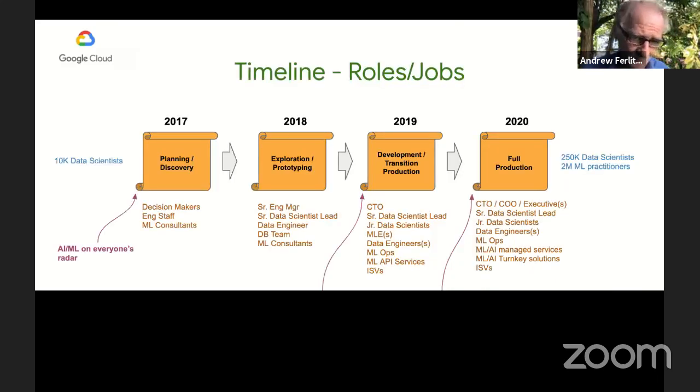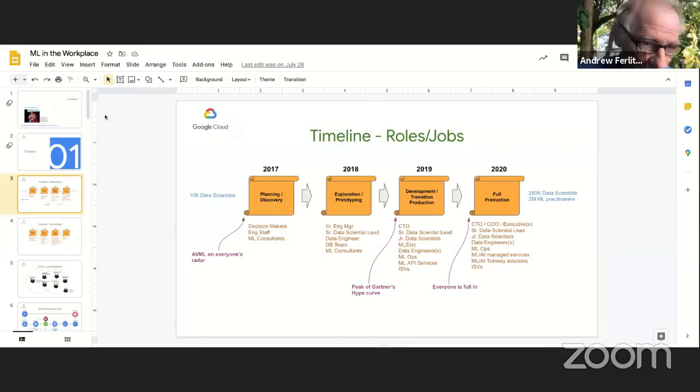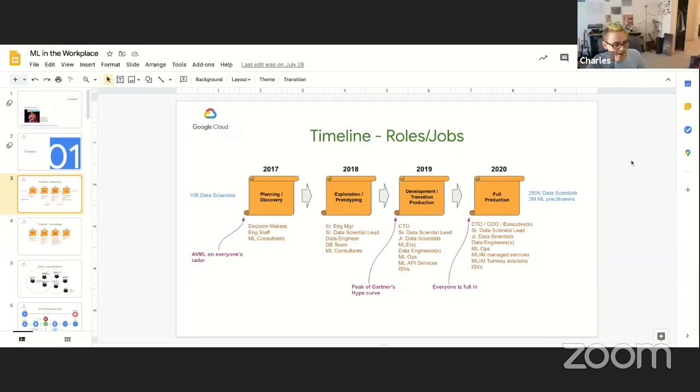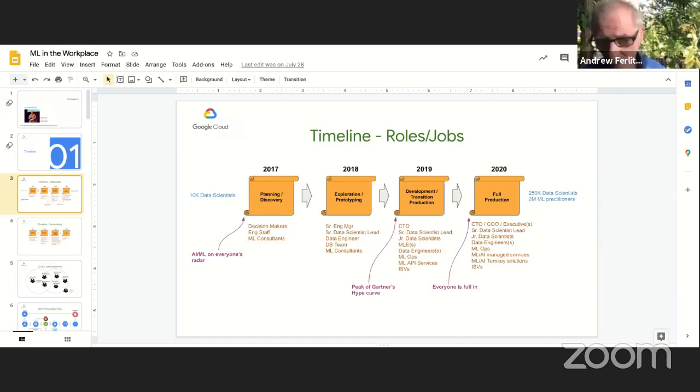By 2018, a lot of these companies were moving away from planning and discovery to exploration and prototyping. And so now you started to see senior engineering management involved. Typically by now, at least one senior data scientist has been hired as a lead and they're starting to fill in the team with data engineers. Where we really saw the change was in 2019. By now, AI, ML is a fundamental aspect of their business. The CTO is involved. You now have really rounded out the data science team hiring junior data scientists to support the senior data scientists.